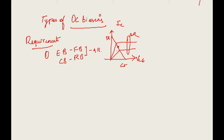The Q-point should be approximately in the center — not very close to the saturation region and not very close to the cutoff region. Only then will you get the proper swing at the output. If you choose the Q-point near saturation, the positive part of the signal will clip out; if near cutoff, the negative portion of the signal may clip out, leading to non-linear amplification.